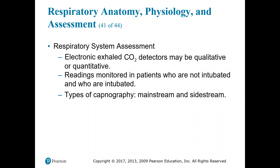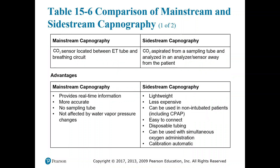With sidestream, you have a little bit of a delay. The advantages of mainstream capnography are that the CO2 sensor is located directly between the ET tube and the breathing circuit — as close to the patient as it could possibly get — and it measures the total amount of CO2 coming across its sensor. It provides real-time information and is more accurate because it's sampling the entire gas passing across its sensors. There's no sampling line and it is not affected by water vapor or pressure changes.